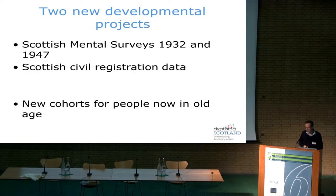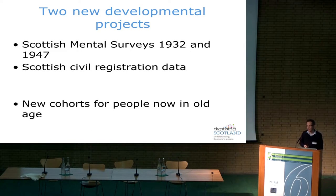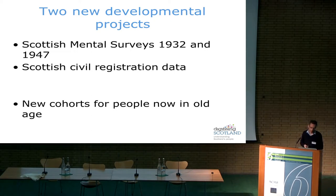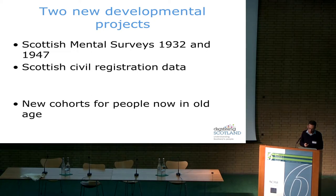That study provided early evidence countering the argument that health inequalities result from people becoming unwell and therefore seeing a drop in income — a residualization of the ill in low-income groups — rather than the argument that poverty or relative economic position causes health differentiation. So those are three examples where linked routine and administrative data have been extremely useful, and what we're striving for here is really the construction of new cohort studies.